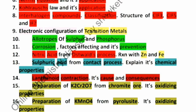Next is corrosion, factors which promote corrosion, and also the various methods of prevention like galvanization and tinning. Nitric acid preparation from Ostwald process and its reaction with metals like zinc and iron. Next is preparation of sulfuric acid from contact process and explain its chemical properties.